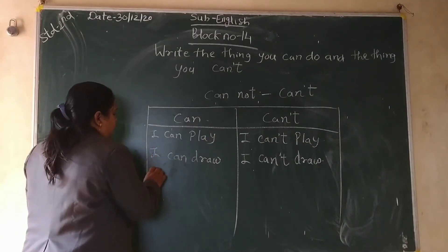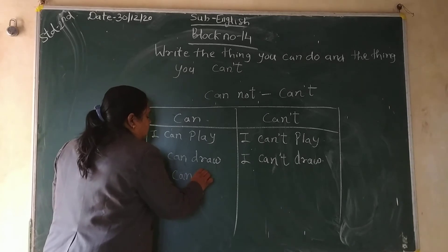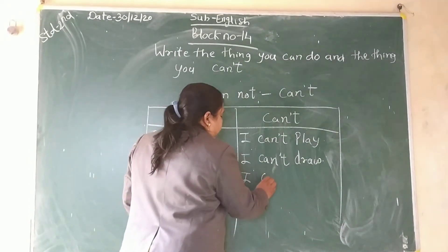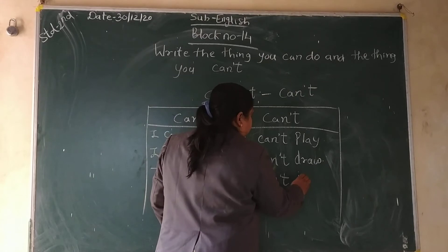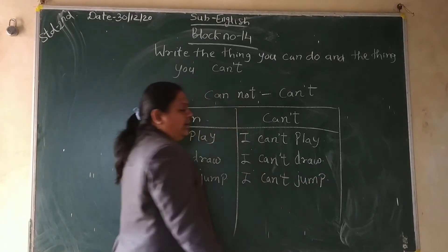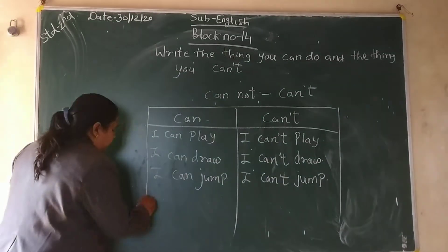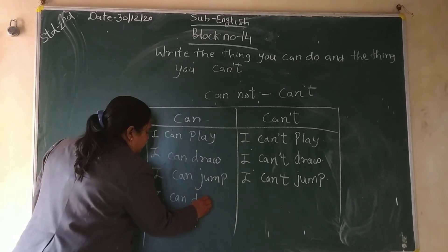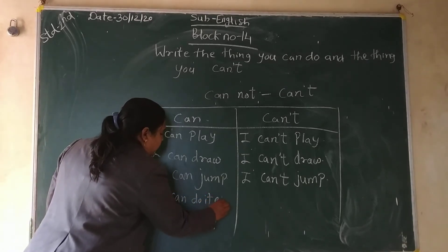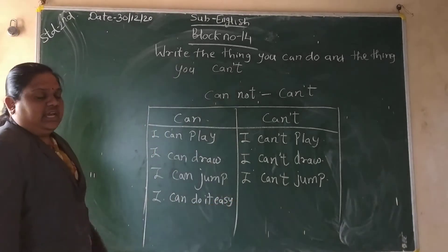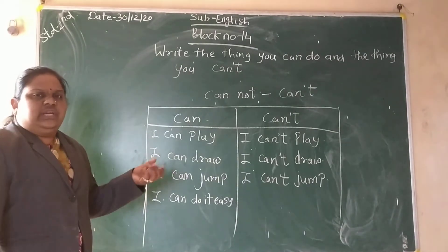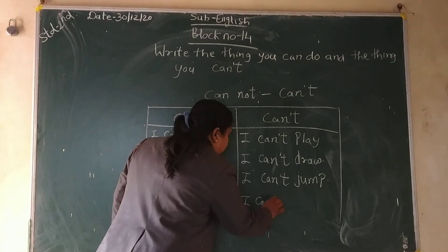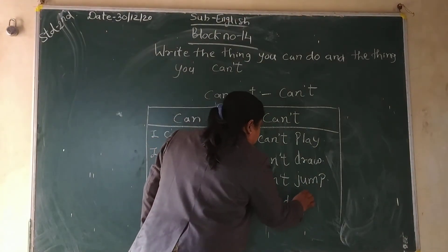Then: I can jump. I can jump. I can't jump. Then: I can do it easily. I can do it easily. Means if you are doing a work, that work you can do easily. I can't do it easily.